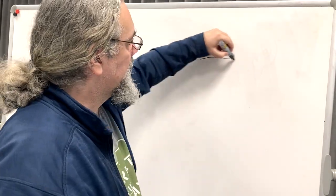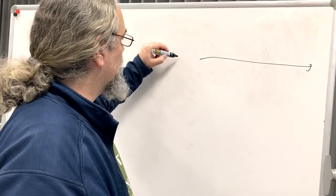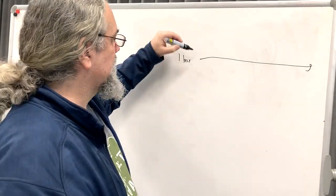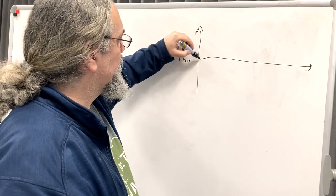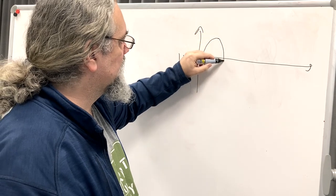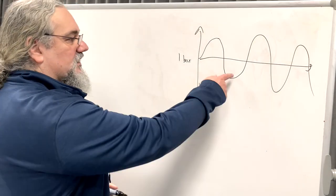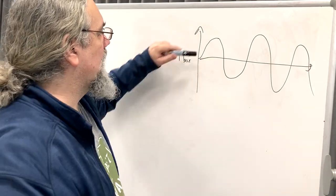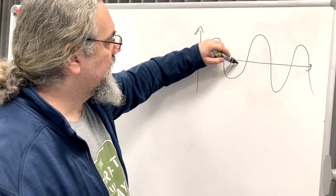If we have normal air pressure, that's about one bar. When the air is compressed, the pressure goes up, and when it's decompressed, the pressure goes down. So, if this is kind of a sine wave — a similar waveform — up here the air is compressed and down here the air is decompressed.